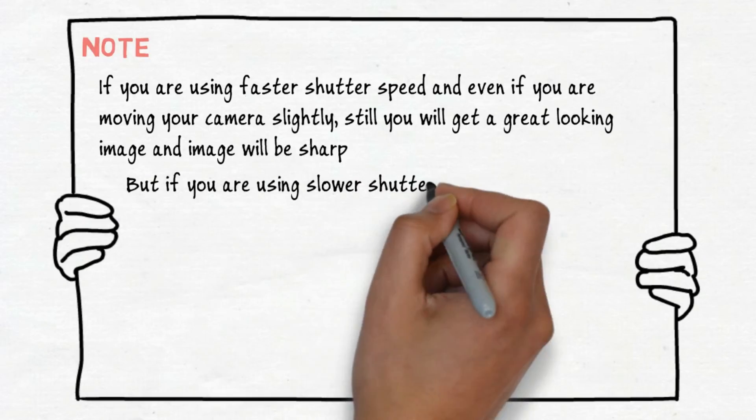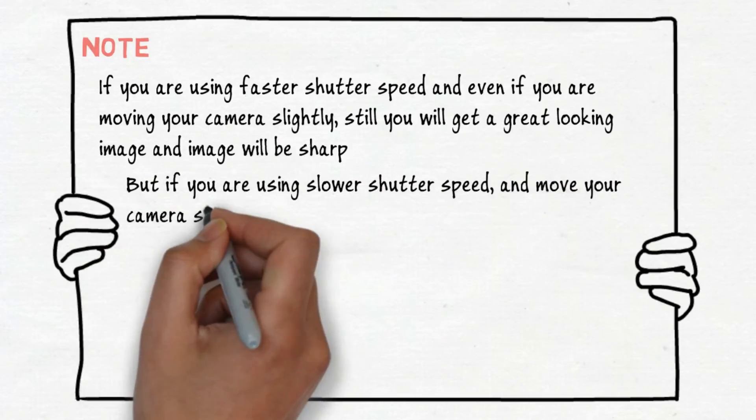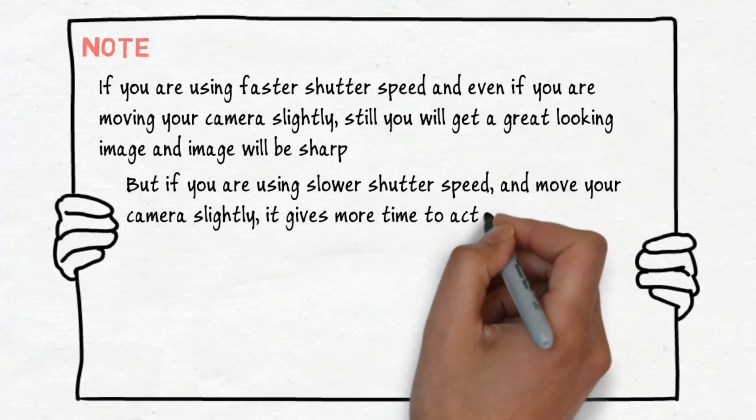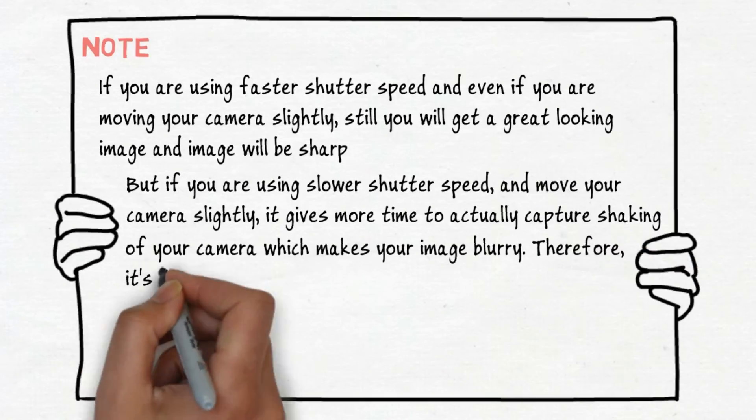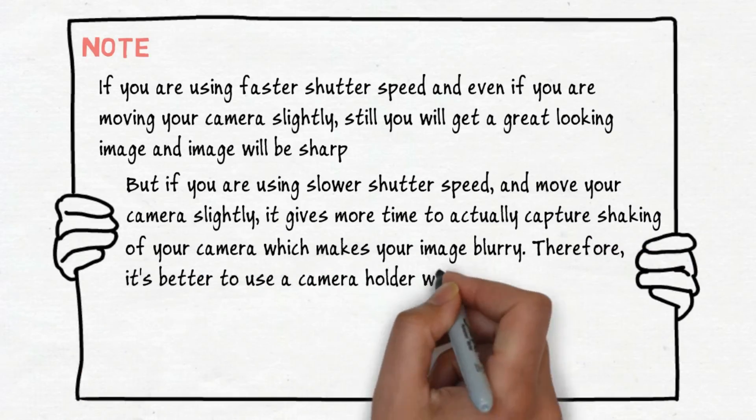But if you are using slower shutter speed and moving your camera slightly, it gives more time to actually capture shaking of your camera, which will make your image blurry. Therefore, it's better to use a camera holder while taking a picture.